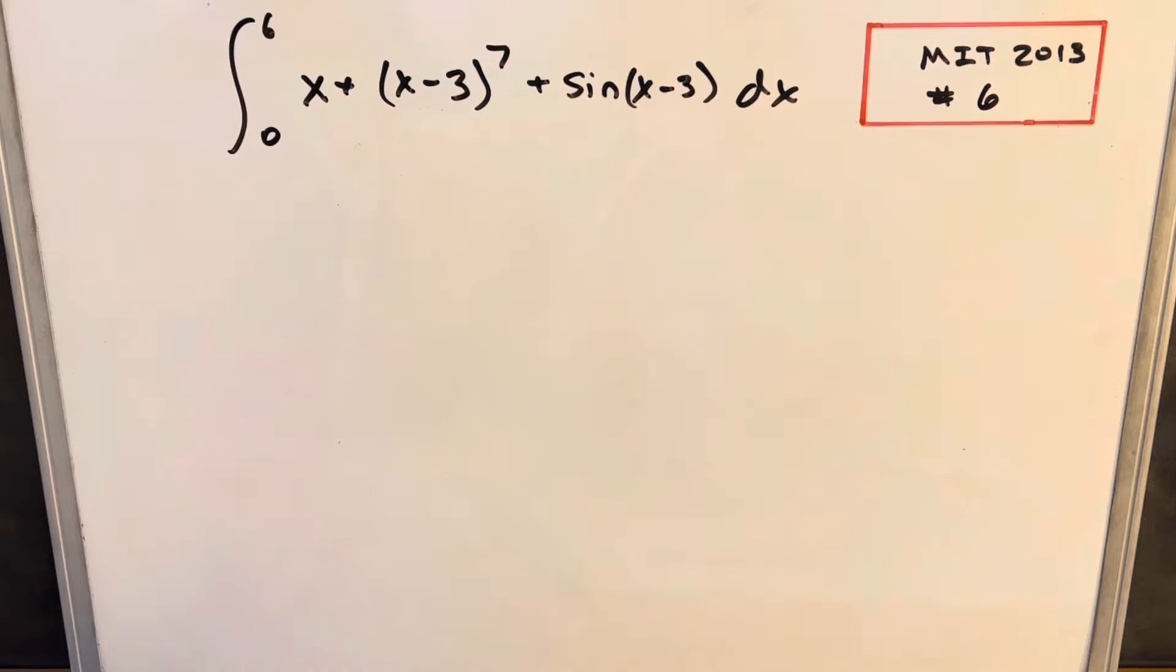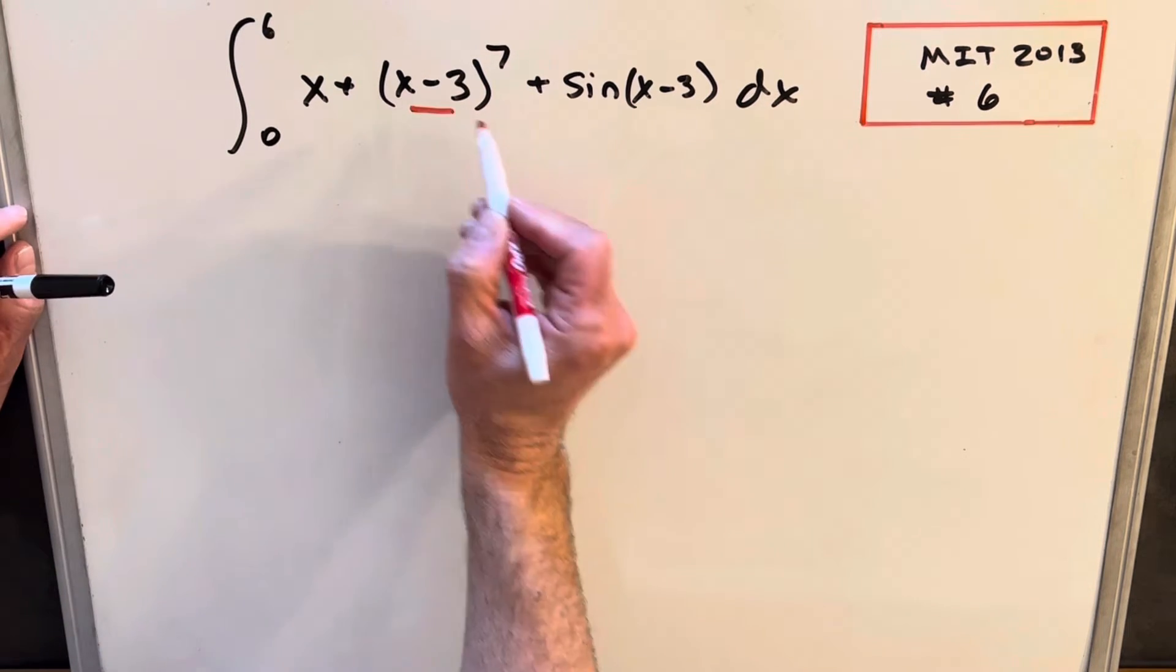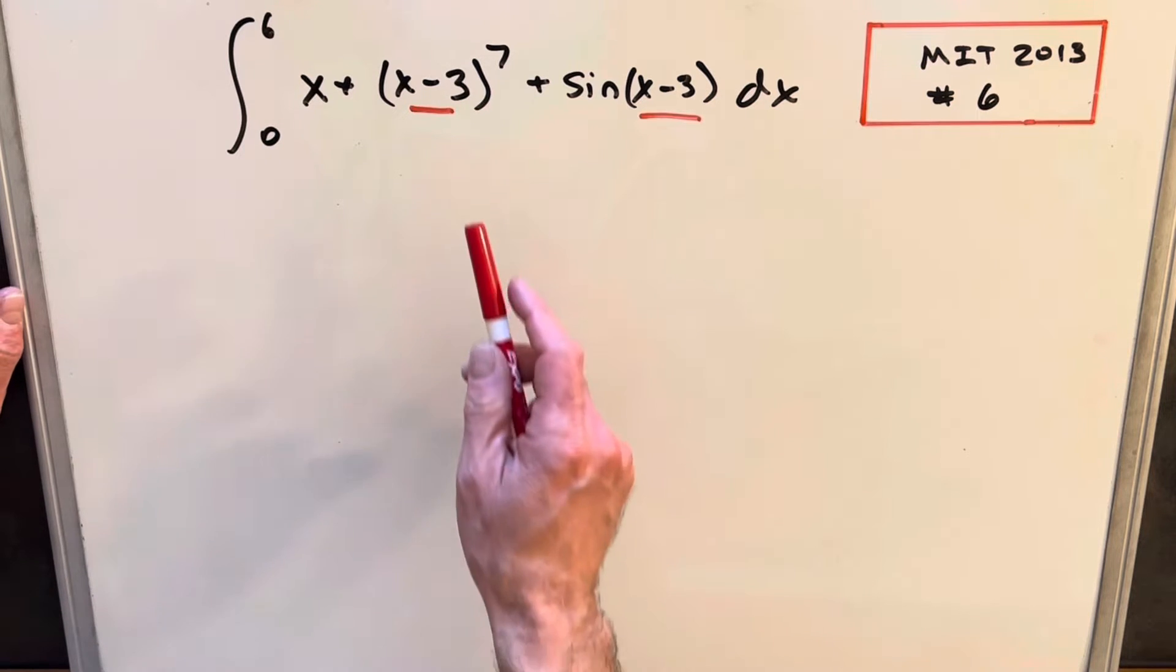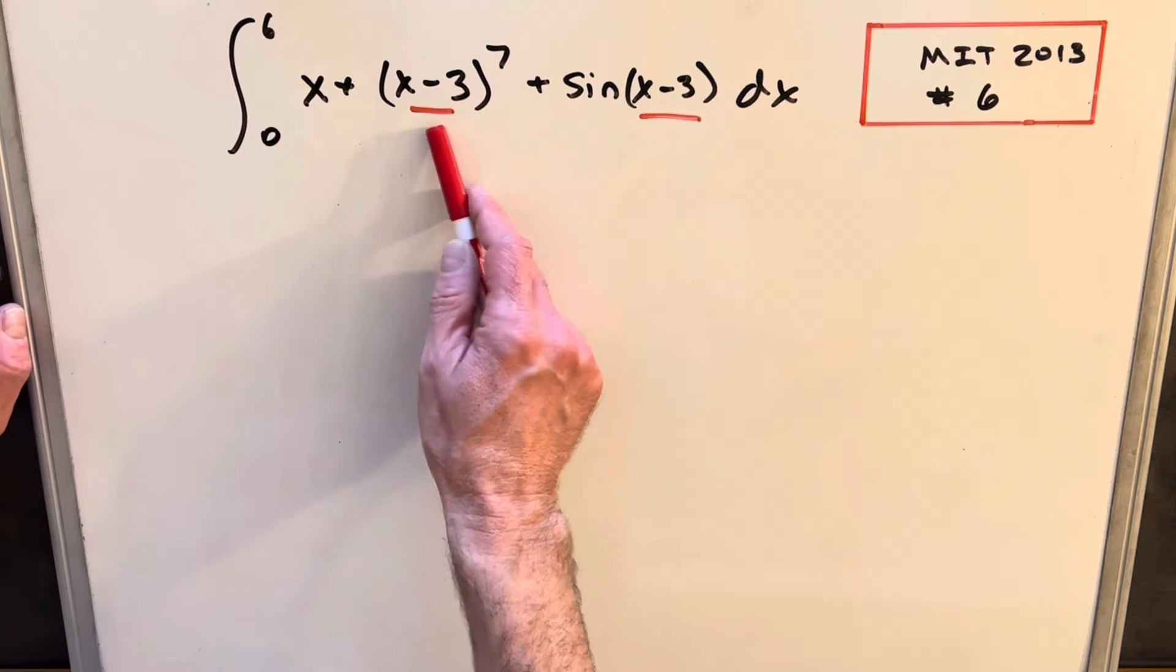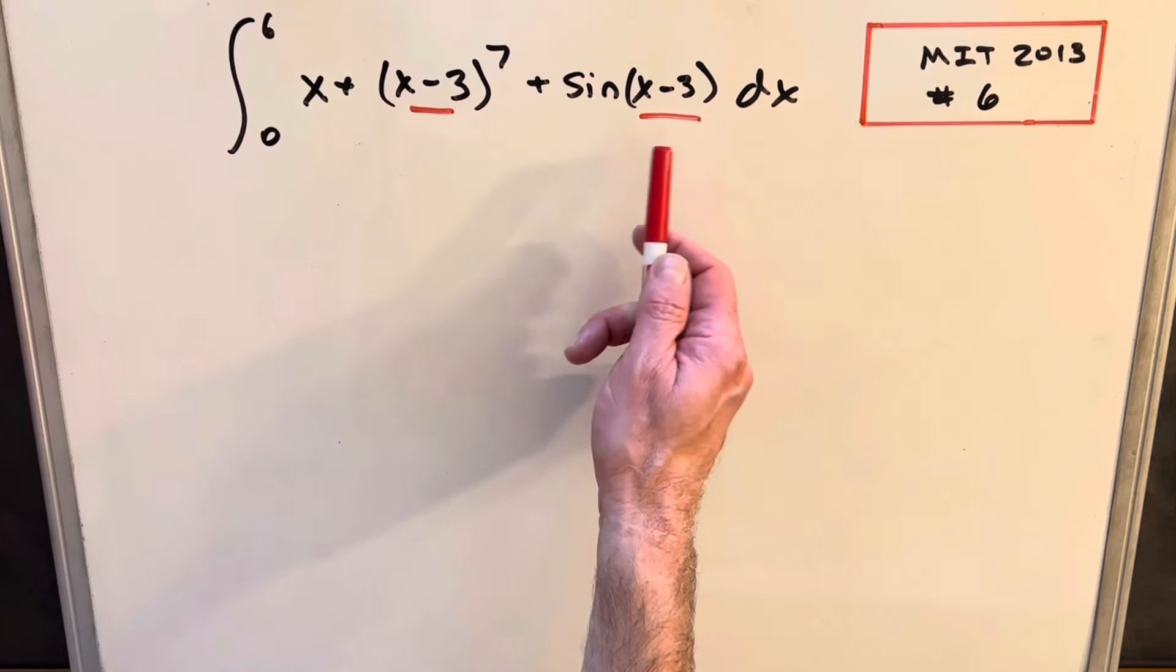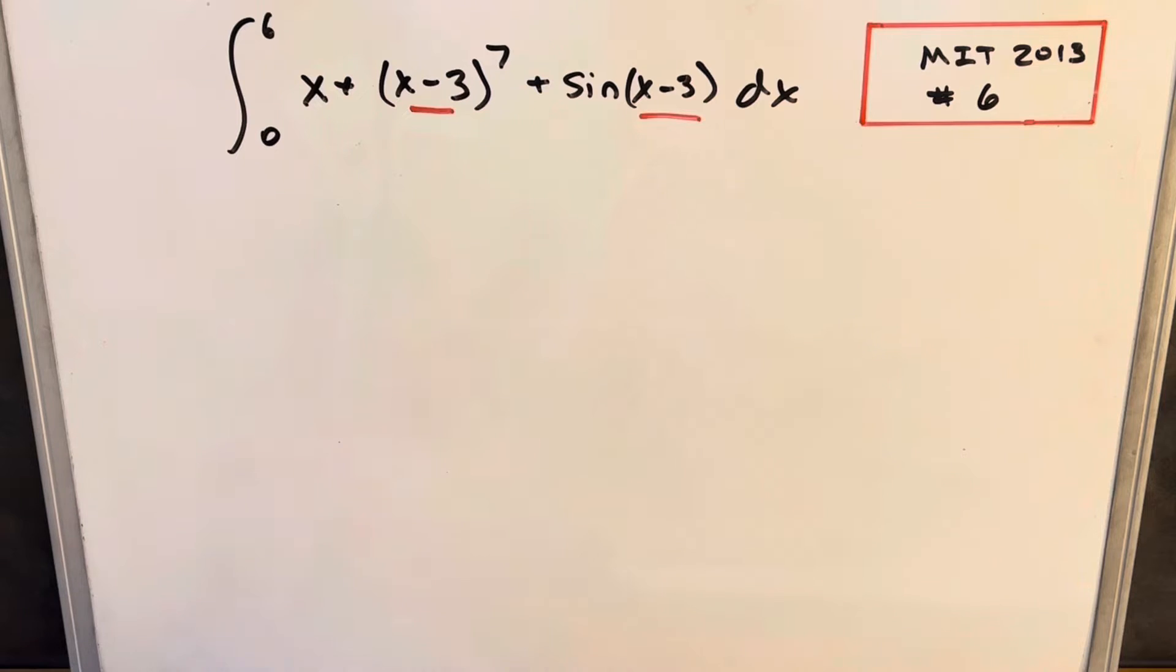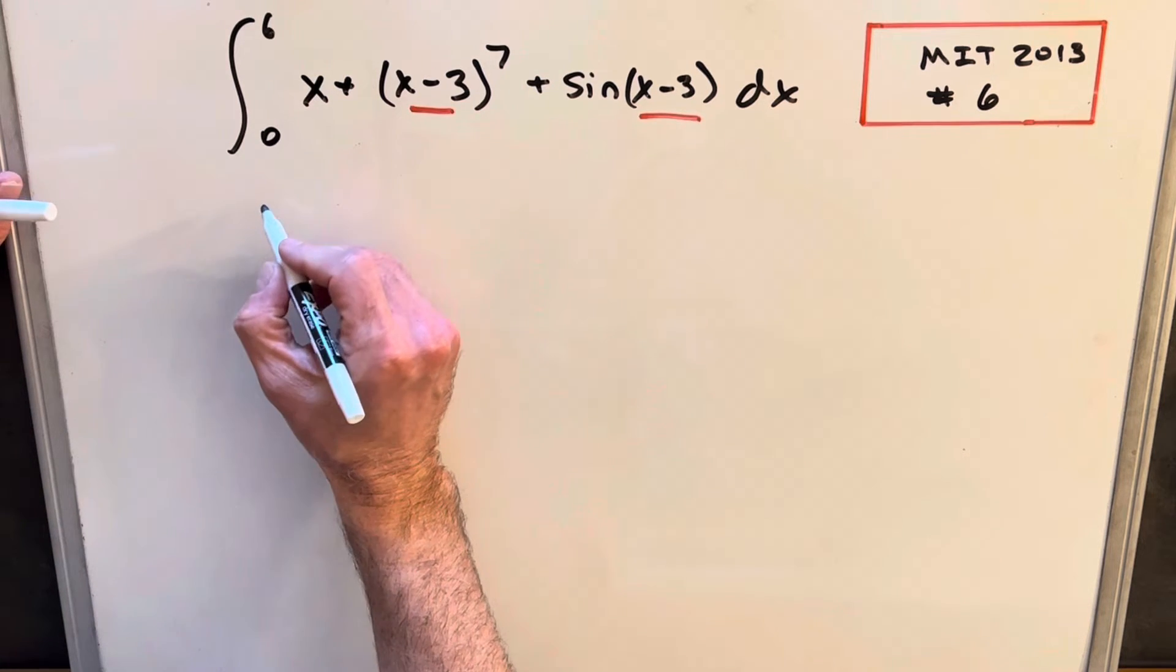Okay, and right off the bat, the thing I noticed first is that this term and this term are exactly the same. And also the fact that we'd actually kind of rather this be one variable, particularly here on the sine. I mean, we could do like the angle difference formula, but I think this is going to clean up a lot if we just do a u-substitution. So let's just do that and see how it goes.